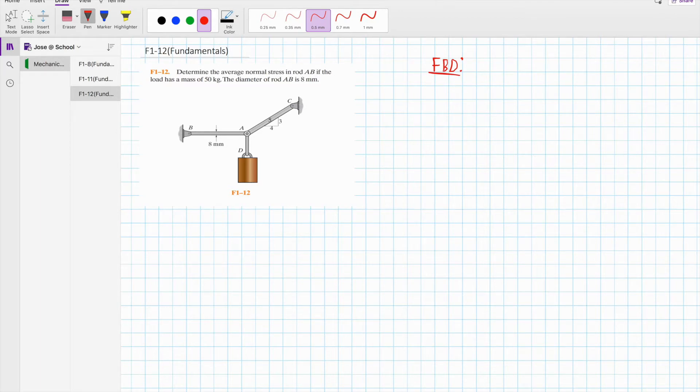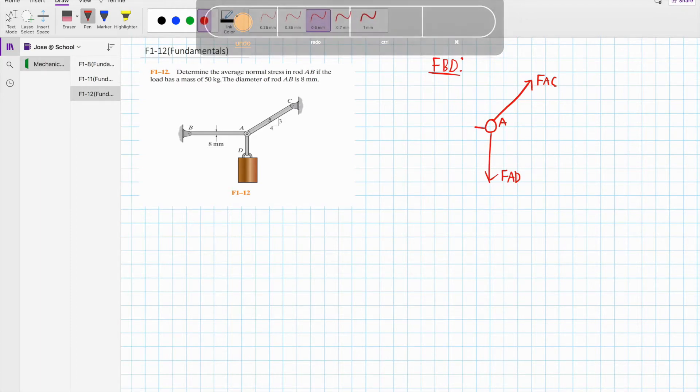You have to find a common point where all the forces are acting. In this case, it's point A, so we start drawing from point A. We have the weight going down, we're going to call it FAD. We're going to call this force FAC, and we're assuming all the forces are in tension. We're going to call this FAB.